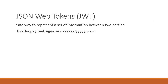The header typically consists of two parts: the type of the token, which is JWT, and the hashing algorithm being used. The payload component of the JWT is the data that's stored inside the JSON Web Token. In our example, the server creates a JWT with the user ID stored inside the payload, and the signature is used to verify the token.